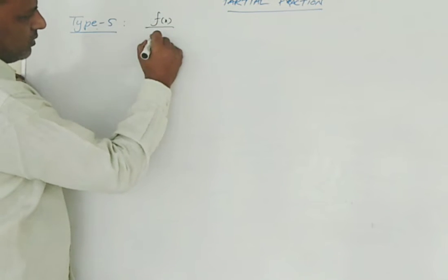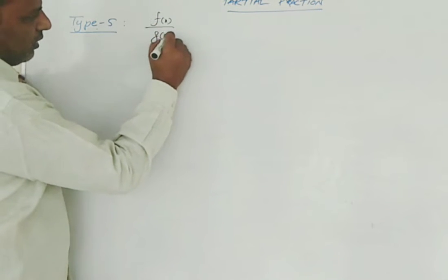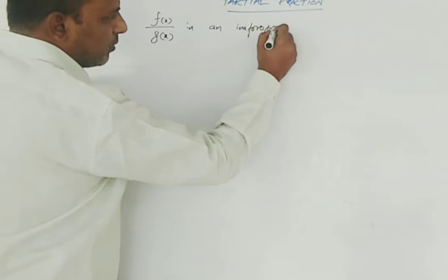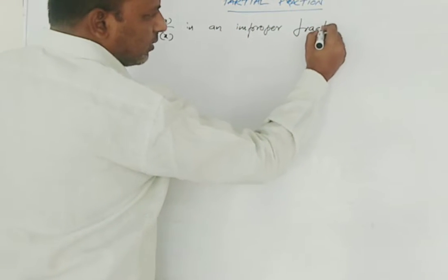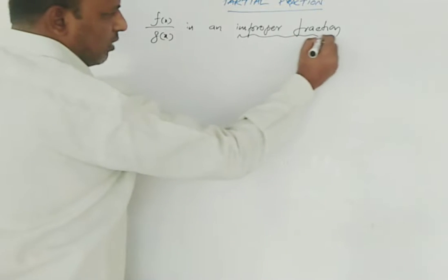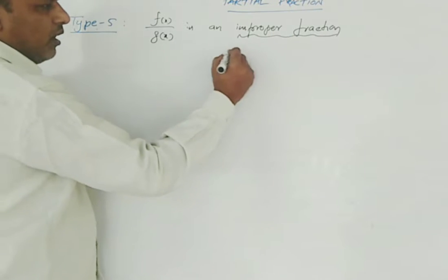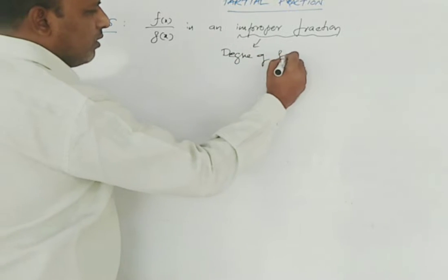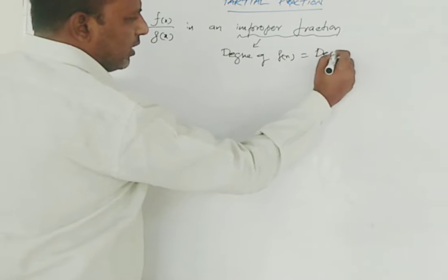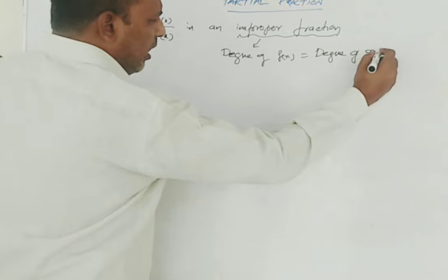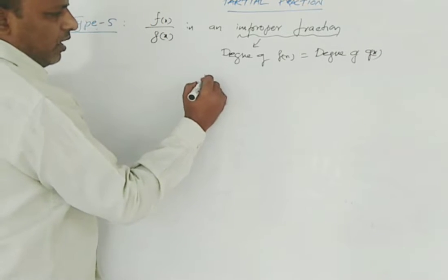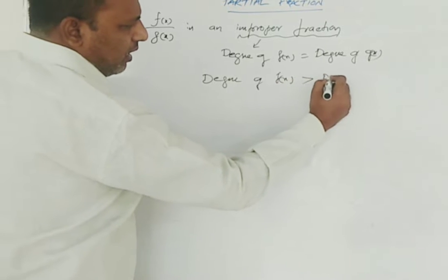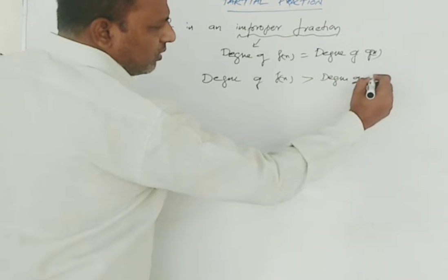F of x by g of x is an improper fraction. Improper fractions are of two types. One is where the degree of f of x is equal to the degree of g of x, and the other is where the degree of f of x is greater than the degree of g of x.